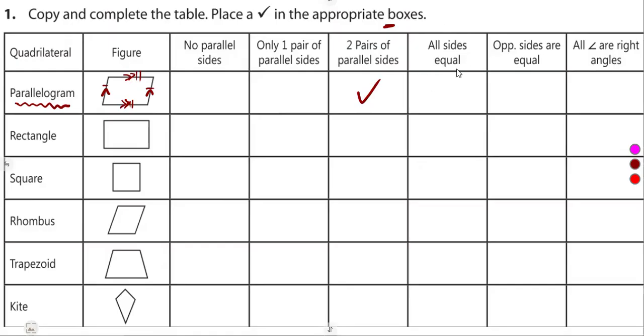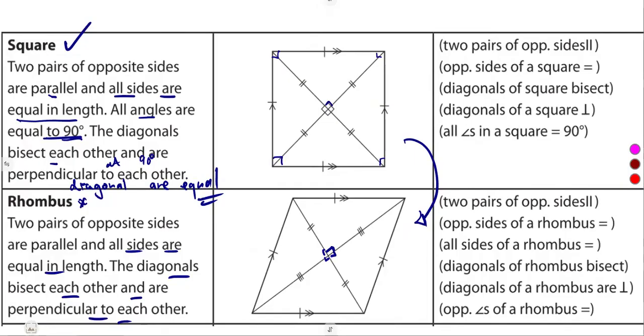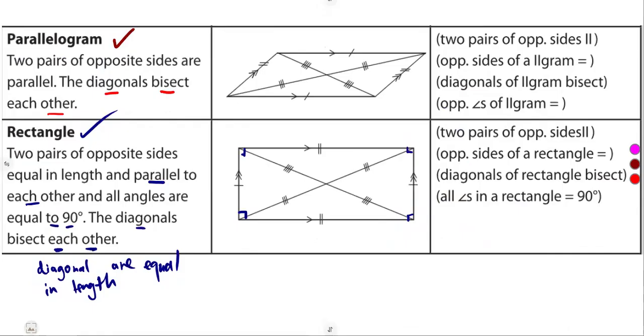All sides equal? No, this is not. It is the opposite sides that are equal. All angles are right angles? No, that's wrong. So what we can take is the two pairs of parallel sides and opposite sides being equal. These are the properties that we have on a parallelogram - two pairs of opposite sides are parallel.